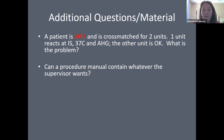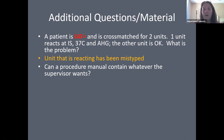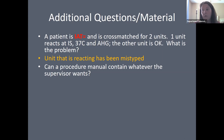If a patient has a negative IAT and you're crossmatching two units, and one unit reacts at initial spin, 37°C, and AHG while the other is compatible, your first automatic thought should be ABO incompatibility. Either the wrong unit was grabbed, there was a mistyping, or the unit was mislabeled. Reactions due to ABO incompatibility will typically be strong — 3+ to 4+ — which is another indicator. This is an automatic stop requiring investigation.